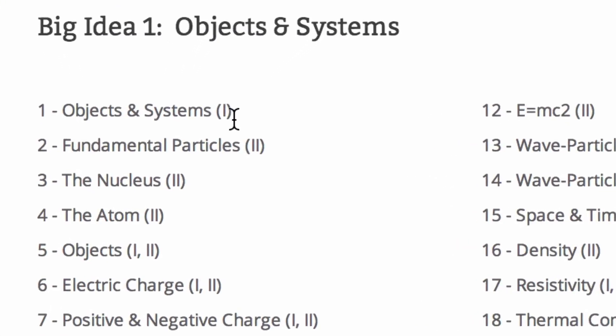So this first one, Objects and Systems, you will see is just for AP Physics 1. But Fundamental Particles would be 2, and then maybe this one on Electric Charge is for 1 and 2.